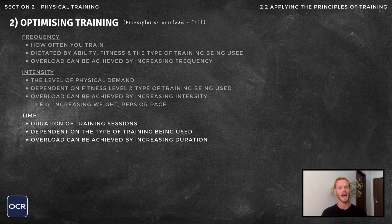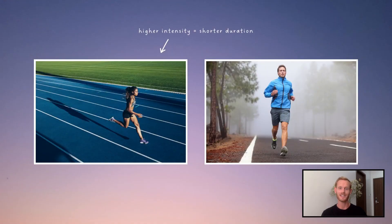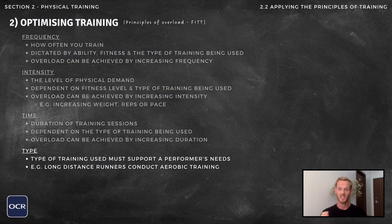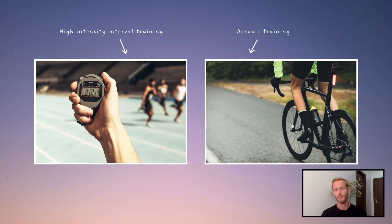The first T stands for time, or how long training sessions last for, and progression can be achieved by gradually increasing duration over time. When setting duration, intensity must be considered, as certain types of training require longer than others to be effective. The other T stands for the type of training, which must be considered if the specific needs of a performer are to be fulfilled. For example, a sprinter might use high-intensity interval training to develop anaerobic fitness and speed, while a long-distance cyclist would benefit more from aerobic training methods.